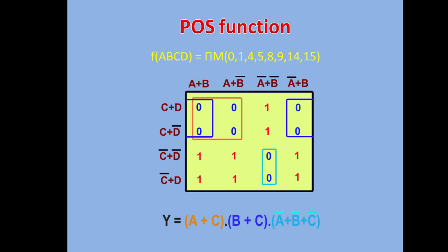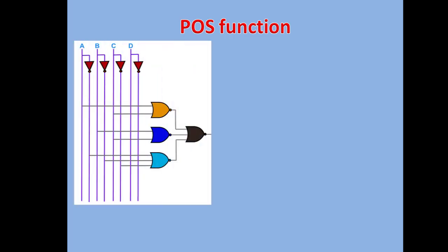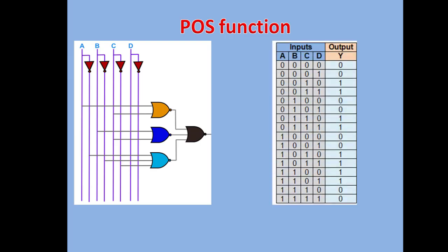Now let us implement this using Simulide. The circuit uses NOR gates — because this is a POS expression, we need a NOR-NOR combination to implement it. We require three NOR gates because there are three product terms, and finally one NOR gate at the output. This is the truth table we need to verify.